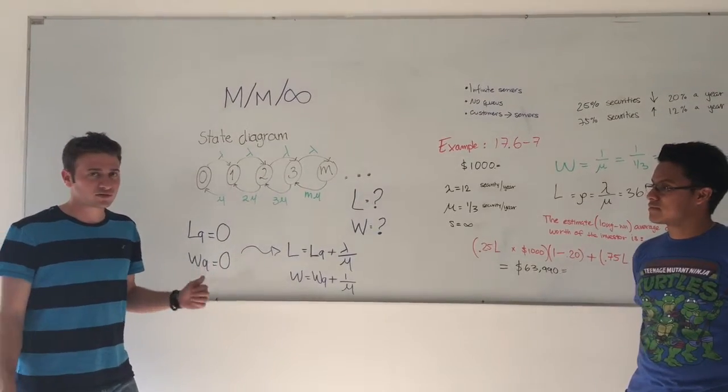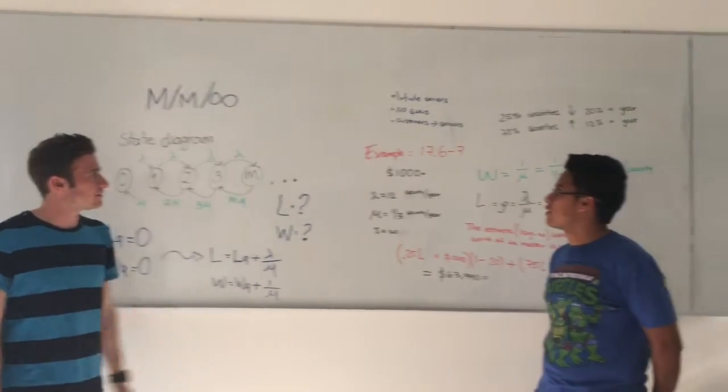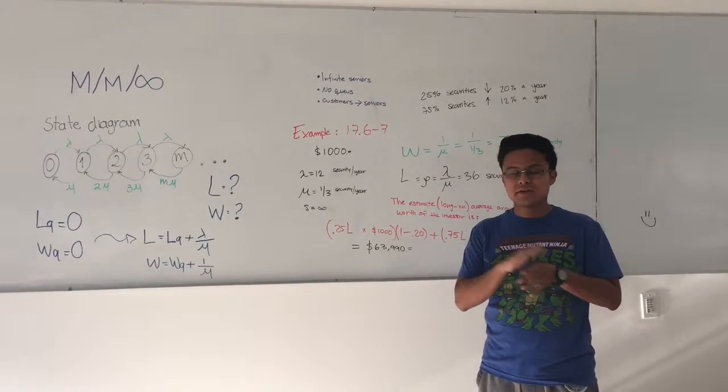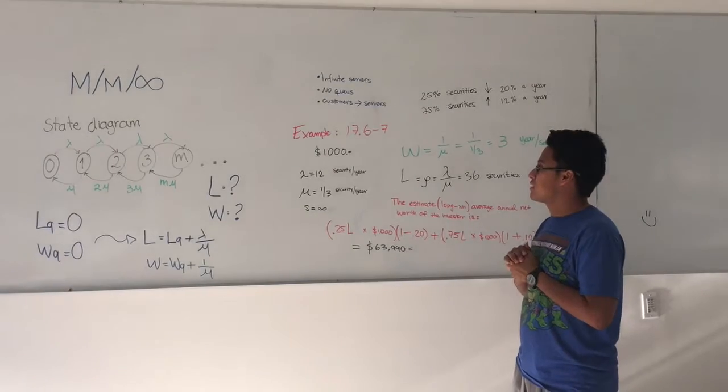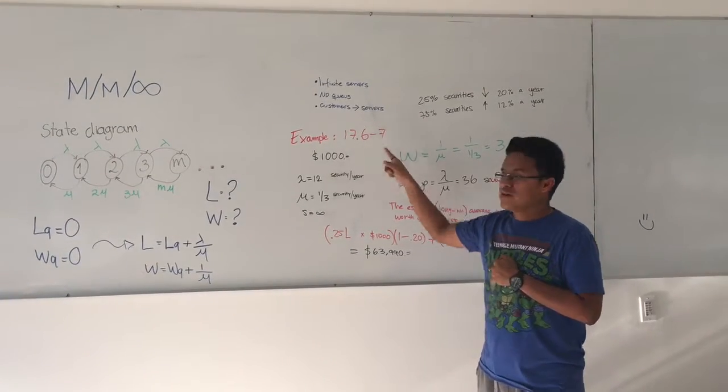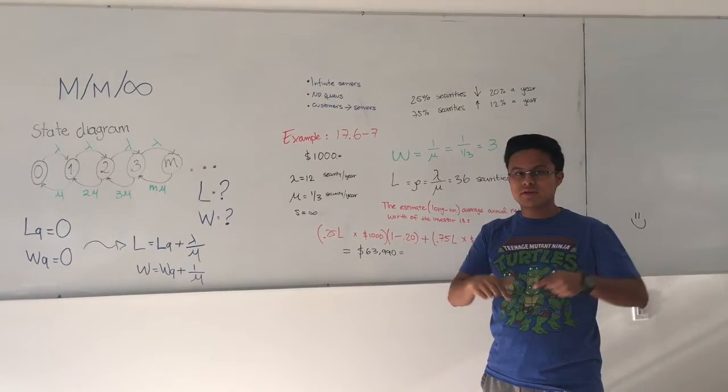And Daniel is going to explain a practical example. Well, to make an example of the book Operation Research and Introduction of Hamdiya Taha. The example is number 17.6-9. You can find the whole problem in the description below the video.